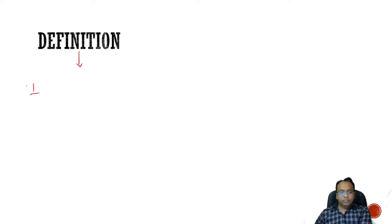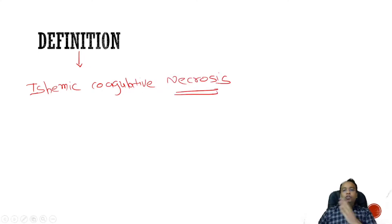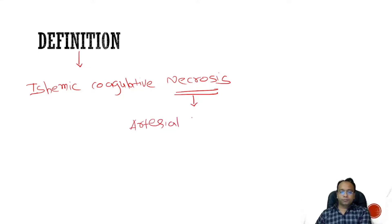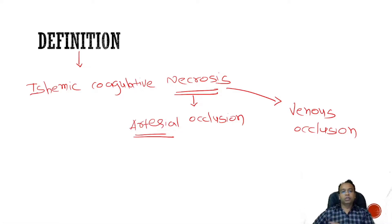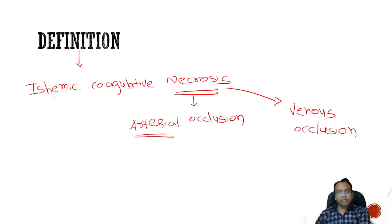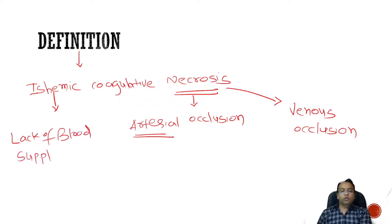So first of all, the definition: what is the meaning of infarction? Infarction is simply ischemic coagulative necrosis — it is necrosis due to ischemia. Now, why ischemia? It is commonly due to arterial occlusion, but sometimes venous occlusion can also be responsible for development of infarction. In most cases it is due to arterial occlusion. Infarction means death of tissue — coagulative necrosis in a tissue due to lack of blood supply.